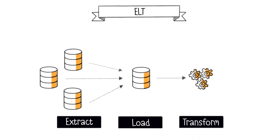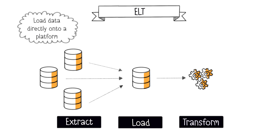Now let's move on to ELT, which is a variant of ETL. ELT, which stands for Extract, Load, and Transform, also extracts data from one or multiple sources. However, the key difference is in the next step, as it loads the data directly onto a target platform without performing any transformation on the data. Since there is no upfront processing, the data ingestion process with ELT is much faster than with ETL.